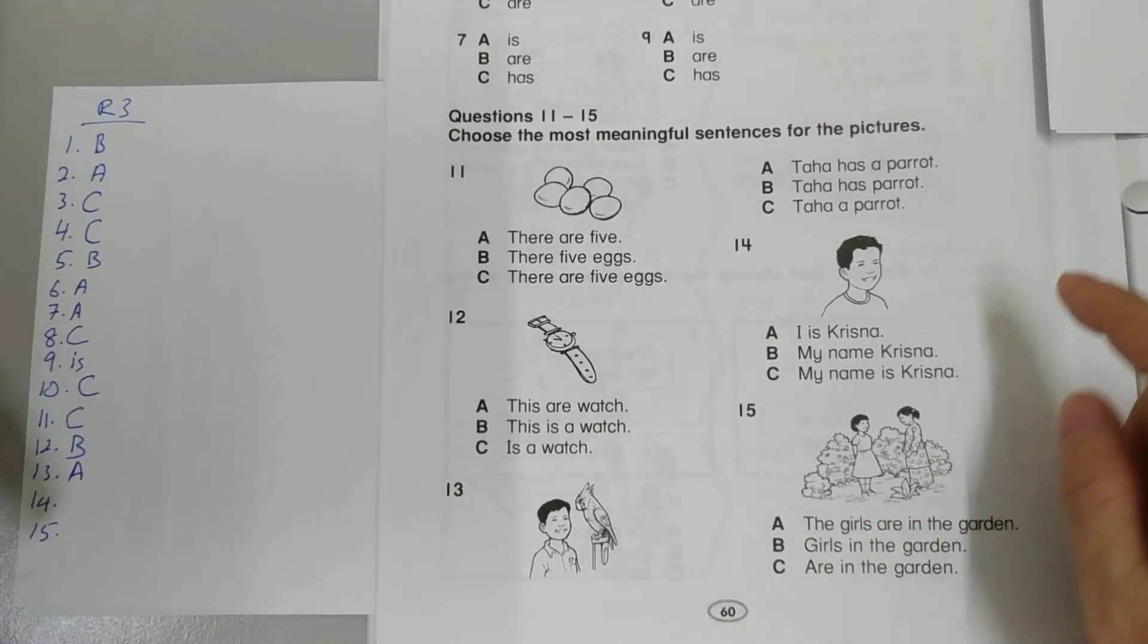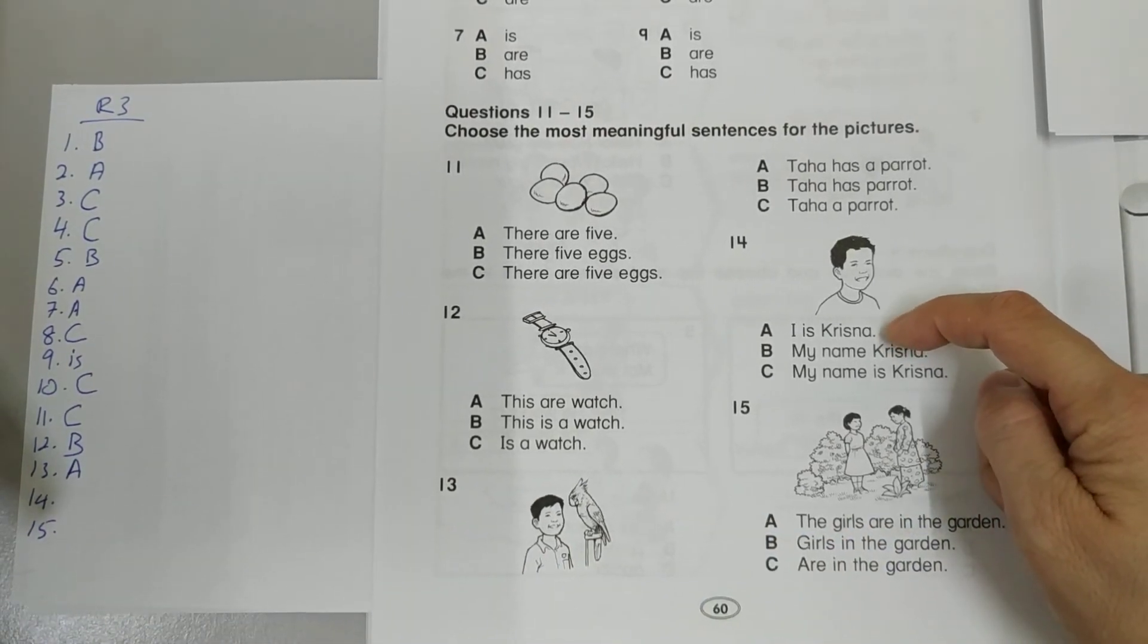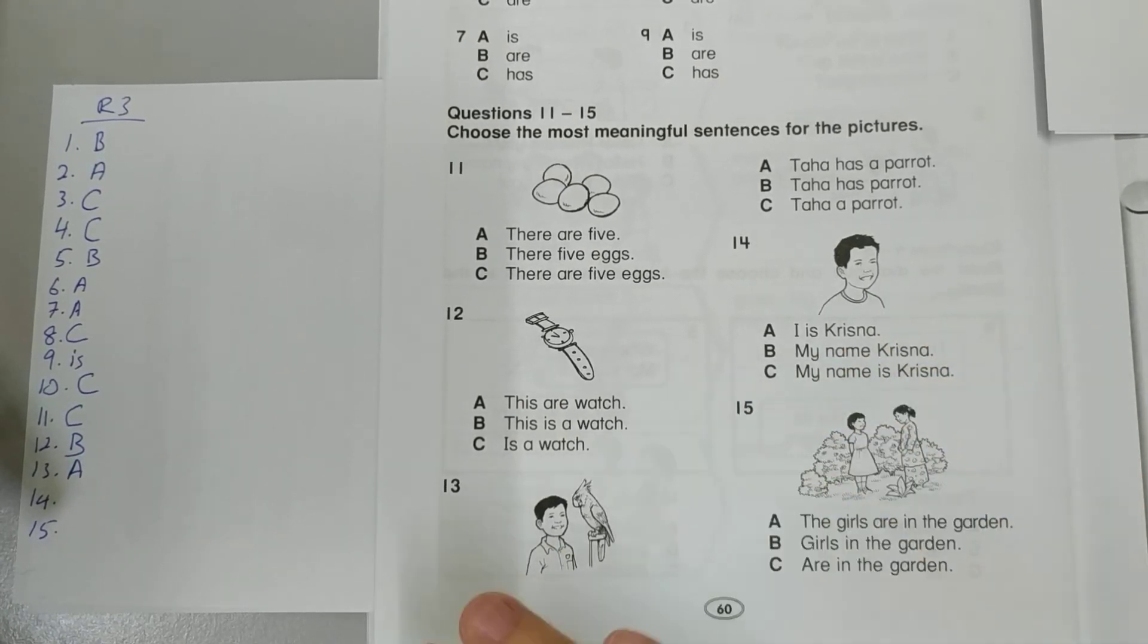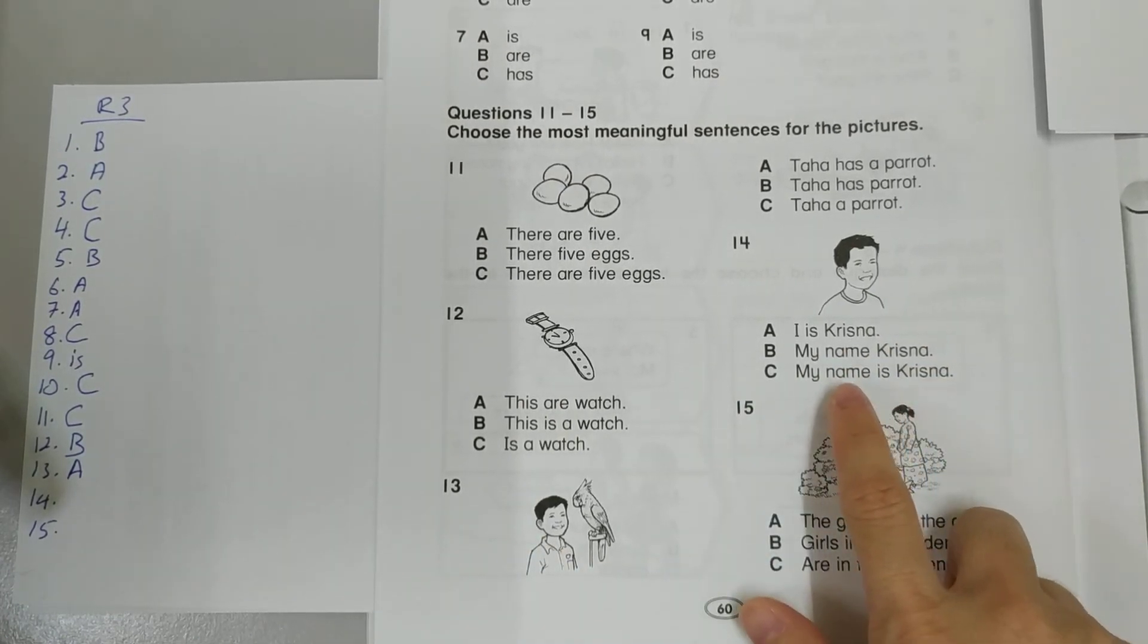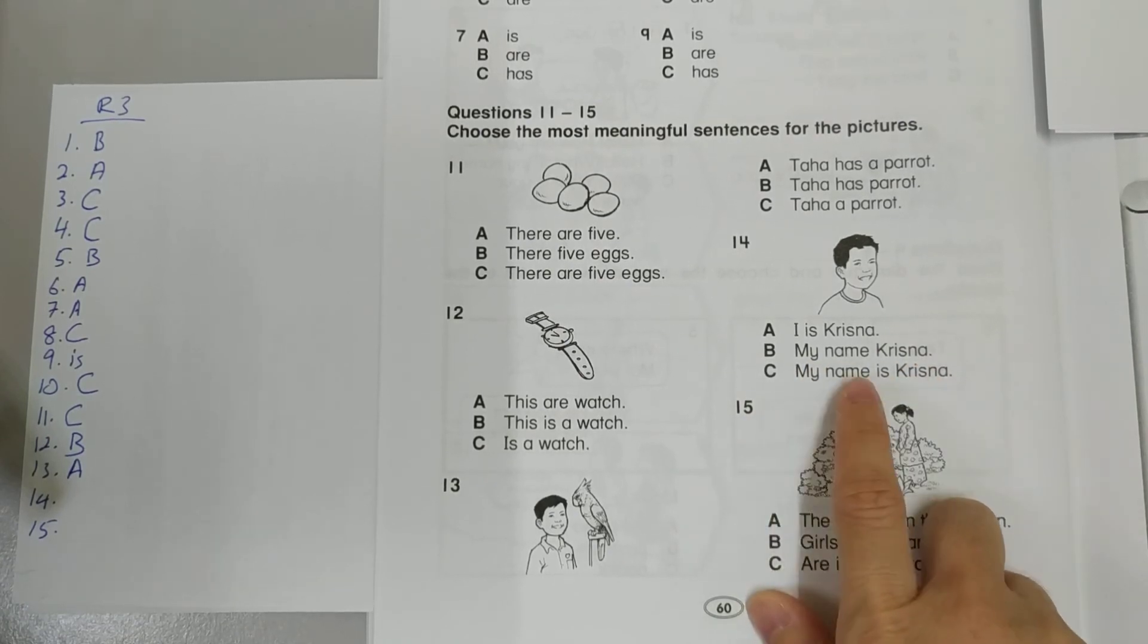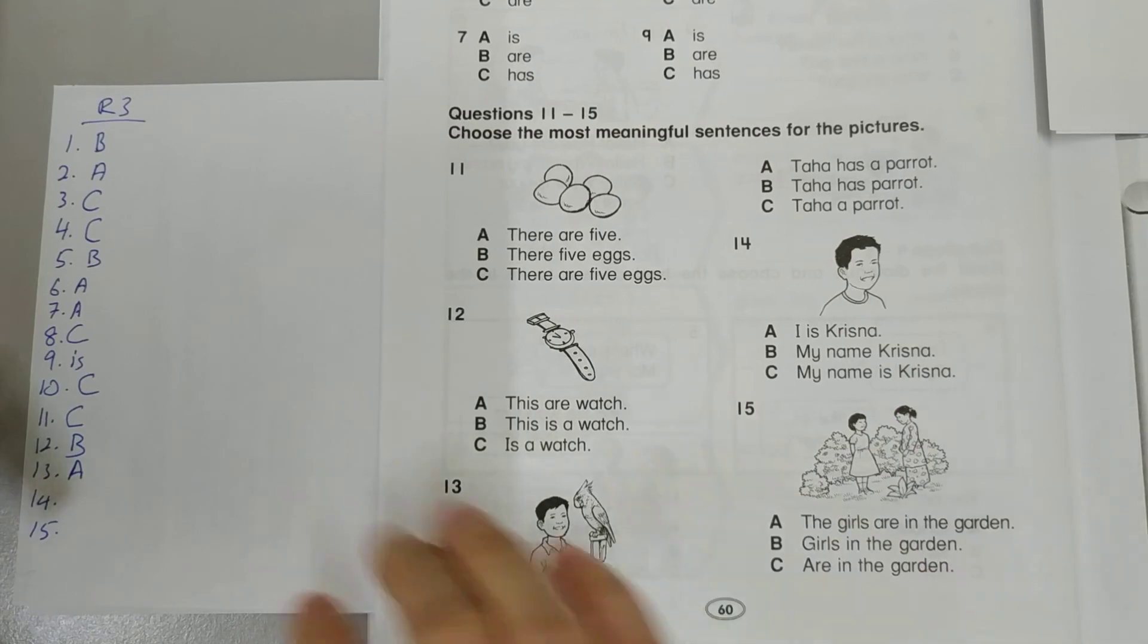Now let's look at 14. I is Krishna. Definitely grammatically wrong. My name, Krishna? Still wrong. My name is Krishna. That's correct.